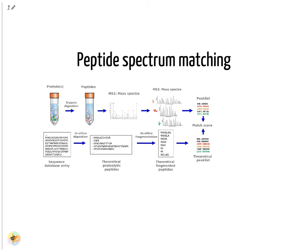Peptide spectrum matching starts with a protein sequence database of all protein sequences of the analyzed organism. Analogous to the procedure in the sample, the protein sequences are in silico digested — meaning the sequences are cut after each arginine and lysine. These in silico tryptic peptide sequences are then in silico fragmented. All amino acid bonds may potentially break and generate peptide fragments, so all possible fragments are generated in silico.